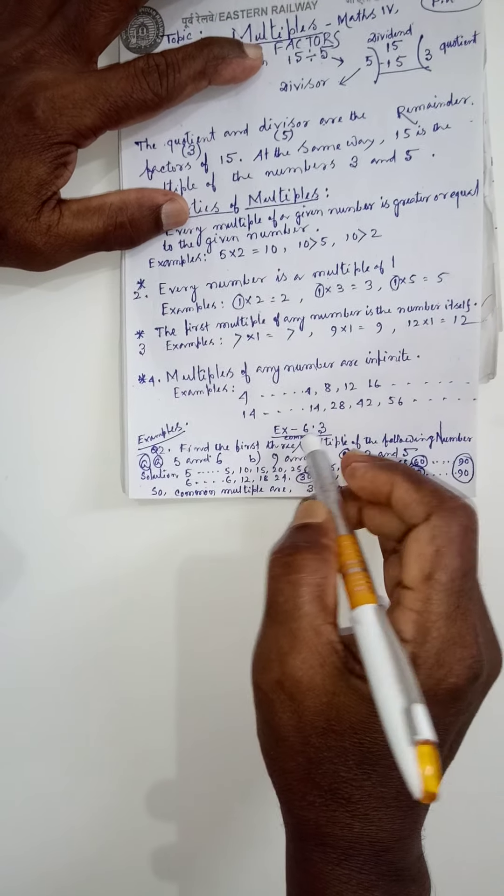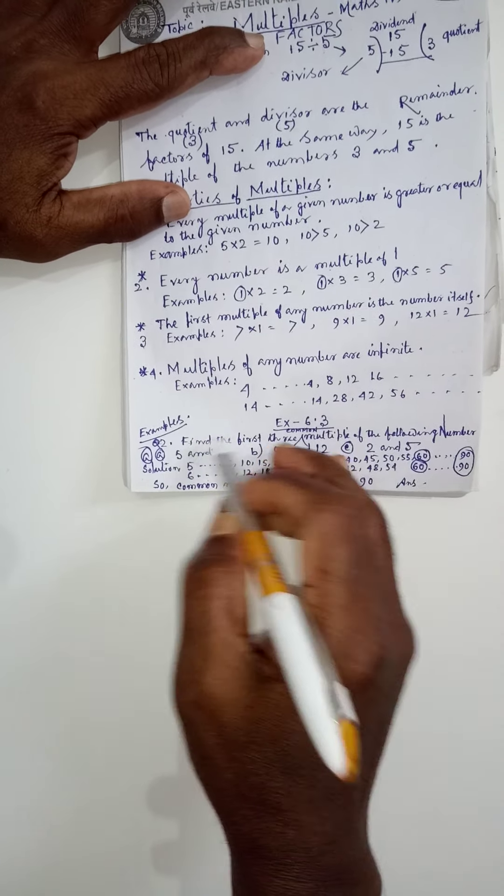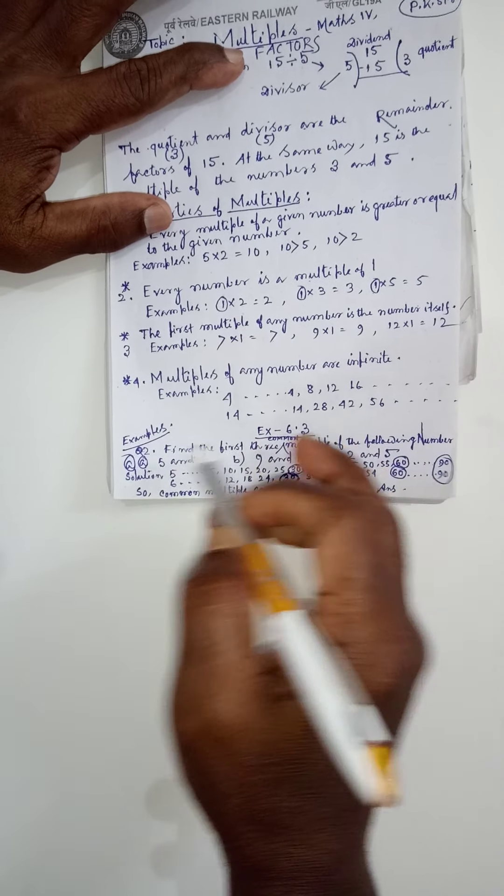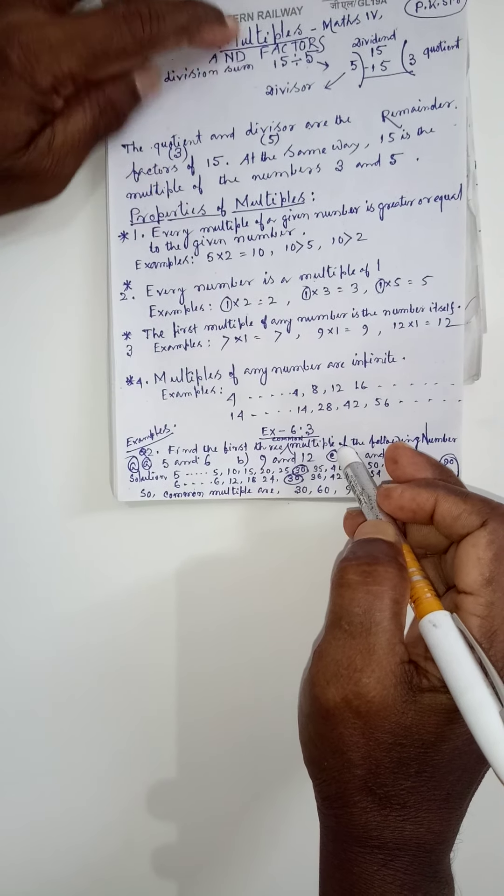Now you will solve the exercise 6.3 and you will be finding out that common multiples of different numbers. Thank you.